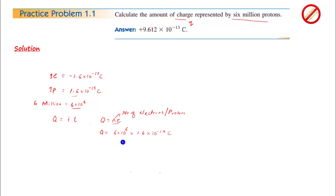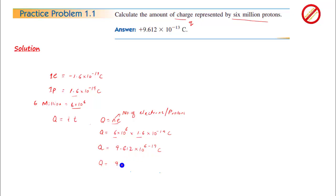So आप इन दोनों को multiply करें: 6 into 1.6 will give you 9.6, और 10 की powers आपस में add होंगी. So Q is equal to 9.6 into 10 raised to power minus 13 coulomb.